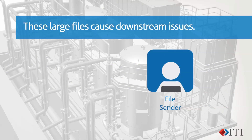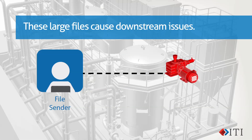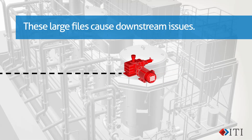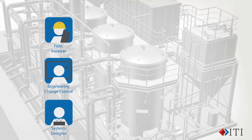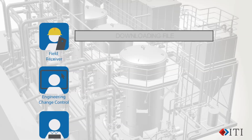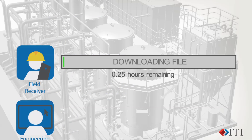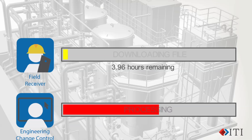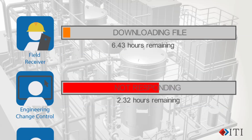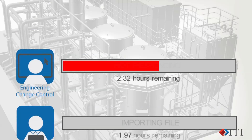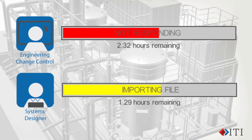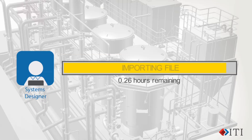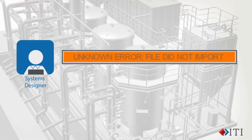Large CAD models cause challenges for all downstream consumers in the plant and process industry. It can take many hours for field receivers to download large CAD models over cellular connections. These large models can also slow down plant design systems, and sometimes can cause unknown errors and system hangs without ever being fully imported.